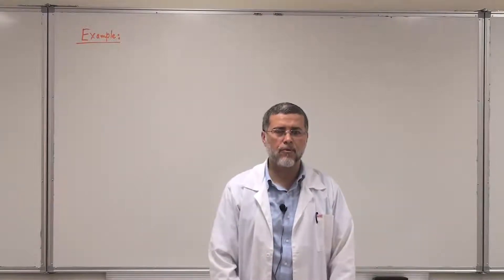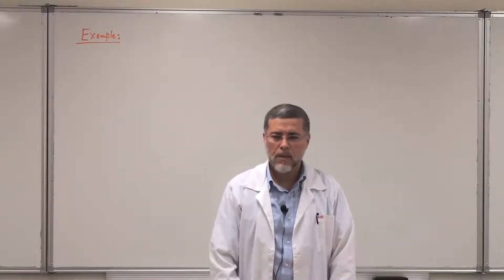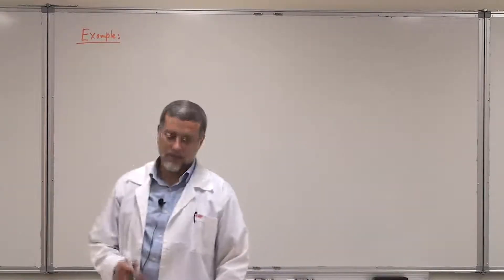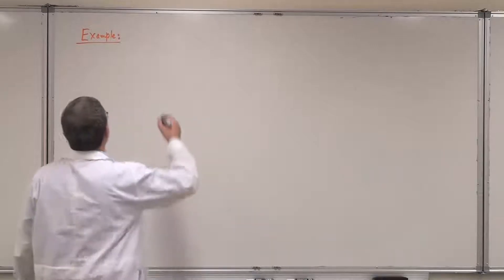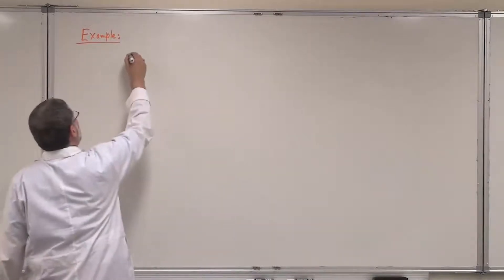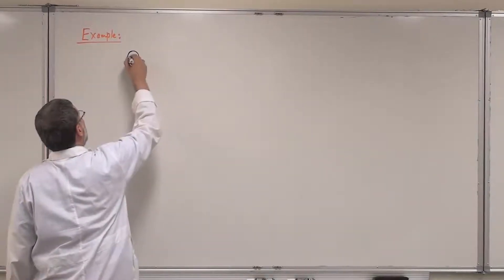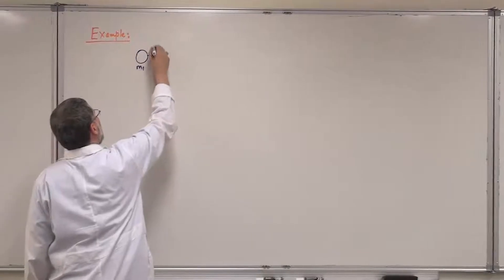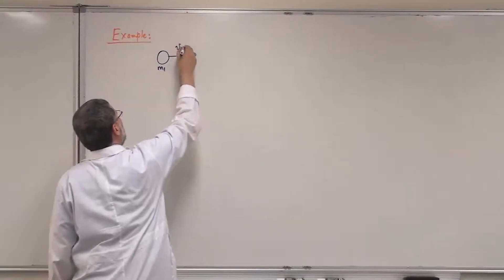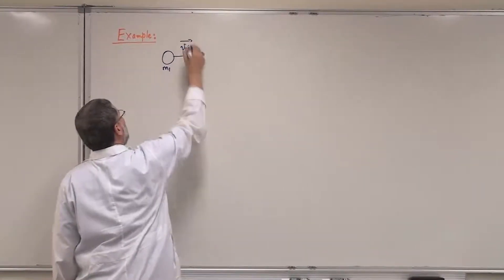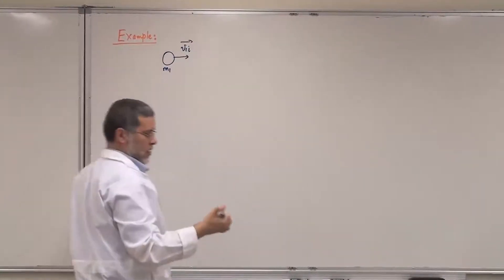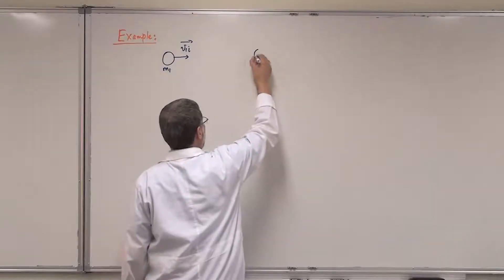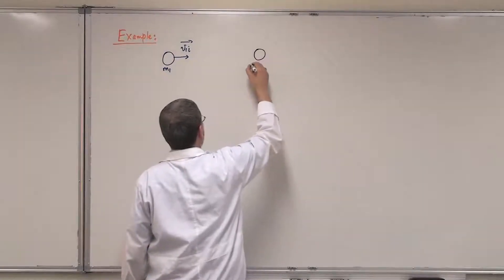Let's take an example of a two-dimensional collision. We have a mass M1 with initial velocity V1 initial — this is the projectile — and a target at rest, M2.